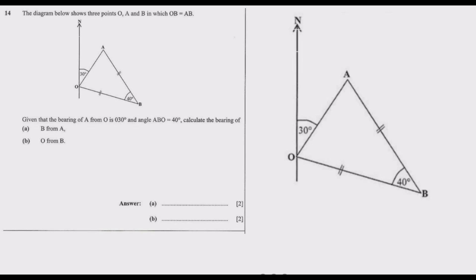The first question is asking us to find the bearing of B from A. What it means is you go to A and draw a north line, parallel to this line. We want to know: if you're at A, how many degrees should we turn to face B? To find this, we need to know a specific angle. Note that this triangle is an isosceles triangle — if two sides are equal, this side and this side are equal.